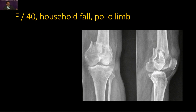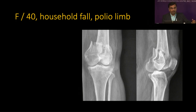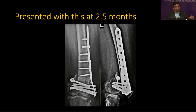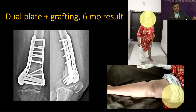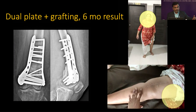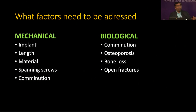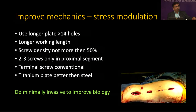Is there a need for something more? A 40-year-old lady had a polio limb and the fracture was fixed, but within two and a half months the plate had displaced. We operated again, did dual plating with bone graft — and at six months there was a clinical result. What factors do we need to address for a distal femoral fracture? Factors are mechanical as well as biological. Mechanical factors don't always mean a stronger fixation or adding a medial plate — we need proper stress distribution into the bone, fracture, and plate. This is known as stress modulation.